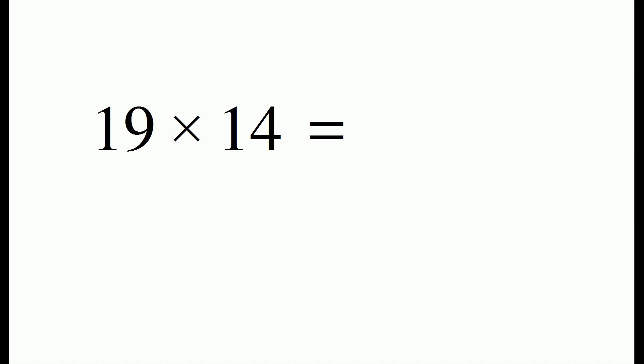So we'll do one more example to illustrate the process. We'll do 19 times 14. The first step is to take the entire number 19 and add it to the digit 4 to give us 23. We put a zero after the result.